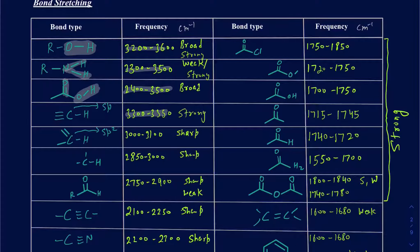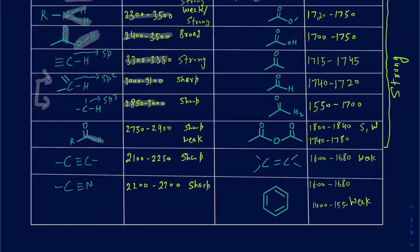An SP2 C–H stretch shows up just above 3,000 cm⁻¹ (3,000–3,100), while an SP3 C–H stretch shows up just below 3,000 cm⁻¹ (2,850–3,000). It's important to distinguish these. An aldehyde C–H stretch appears around 2,750–2,900 cm⁻¹ and can sometimes overlap with SP3 C–H stretches. Carbon-carbon and carbon-nitrogen triple bonds show up around 2,100–2,300 cm⁻¹.